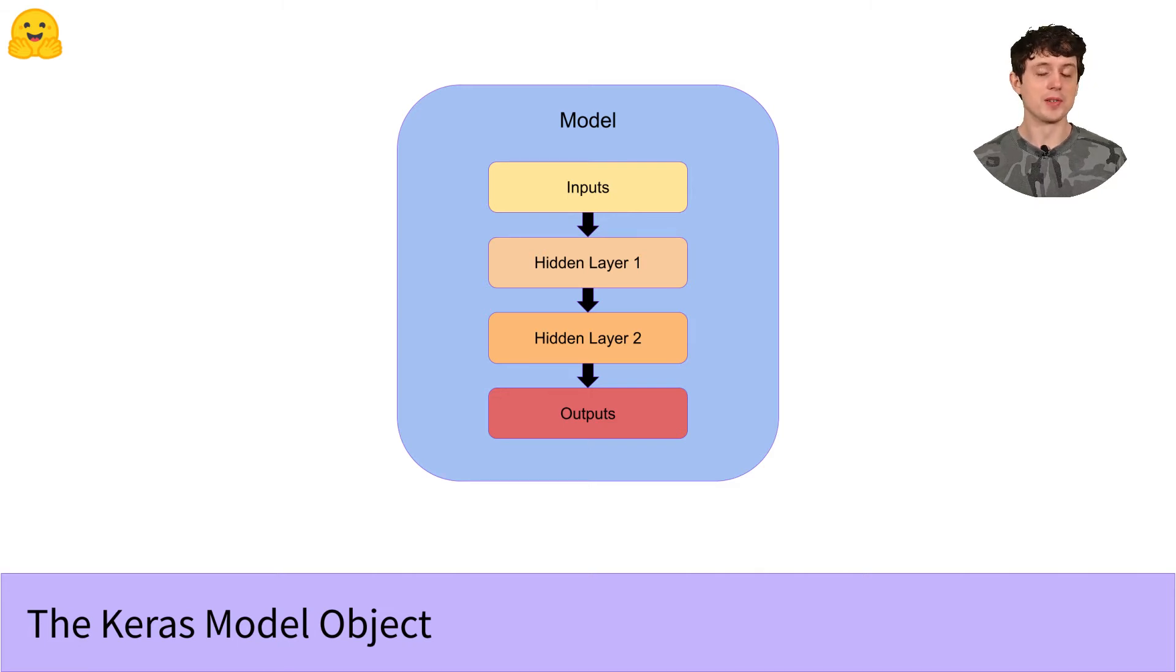If you've used Keras before, you probably started using model objects by building them out by hand. You added one layer after another, maybe using the model.add or the functional approach. And there's nothing wrong with that. Lots of great models are built that way, but you can also preload an entire model, weights and all.